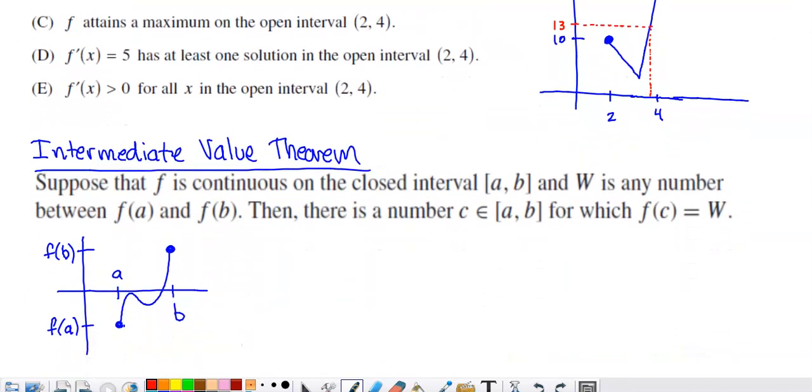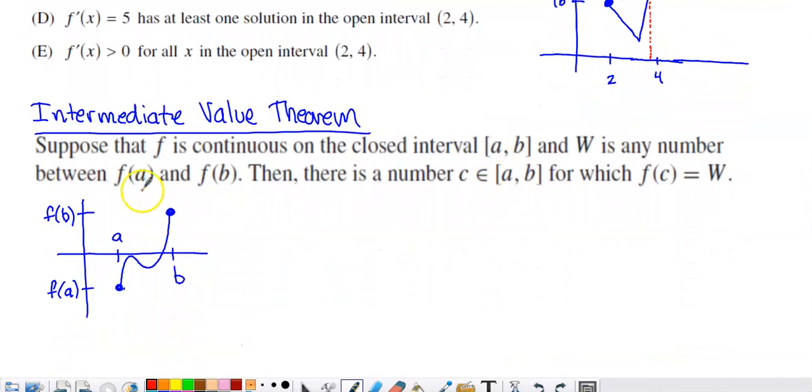What the Intermediate Value Theorem says is down at the bottom of the screen here. So if our function is continuous on the interval and we pick some number in between the y values at the endpoints, then there's got to be a number between a and b that we can plug into the function that produces that y value. So essentially, I can't get from this y value here to this y value here with a continuous graph unless I cross every y value intermediate to these two on the y axis.